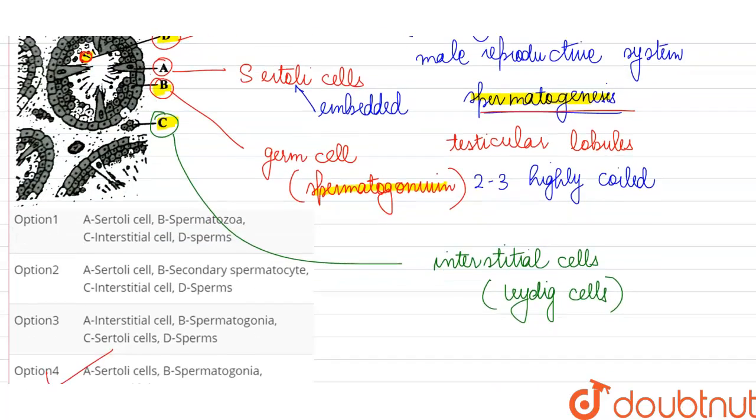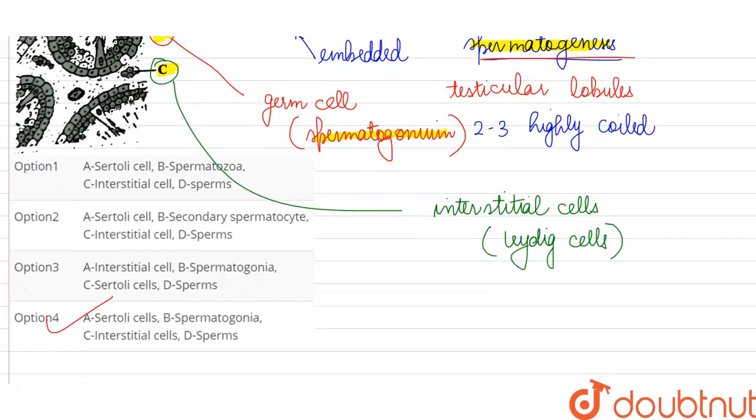Whereas part C, because it is not inside the seminiferous tubule, because it is in the interstitial space, we can identify that these are the Leydig cells or the interstitial cells. Option D is the correct answer.